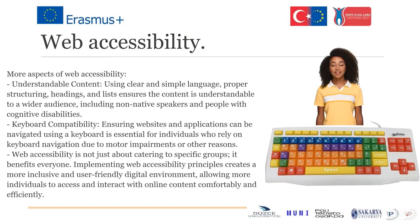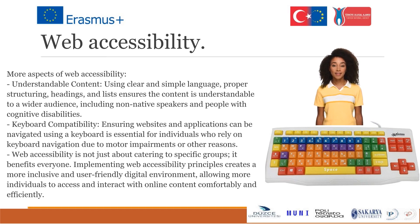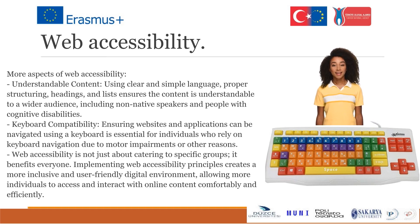More aspects of web accessibility: understandable content — using clear and straightforward language, proper structuring, headings, and lists ensures content is understandable to a broader audience, including non-native speakers and people with cognitive disabilities. Keyboard compatibility: ensuring websites and applications can be navigated using a keyboard is essential for individuals who rely on keyboard navigation due to motor impairments or other reasons. Web accessibility benefits everyone — implementing its principles creates a more inclusive and user-friendly digital environment, allowing more individuals to access and interact with online content comfortably and efficiently.